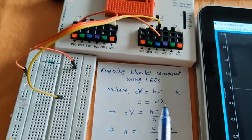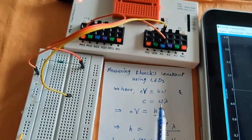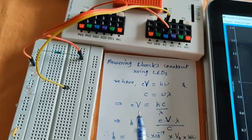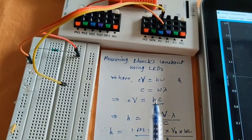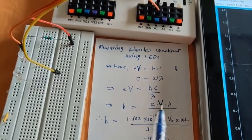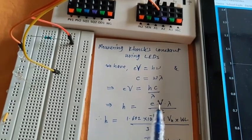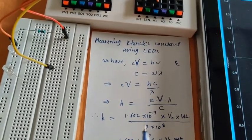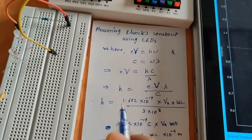Similar relation c equals ν·λ is also well-known. If I put the value of ν from this relation in the earlier relation, I will get E·V equals h·c/λ, where h equals E·V·λ divided by c.